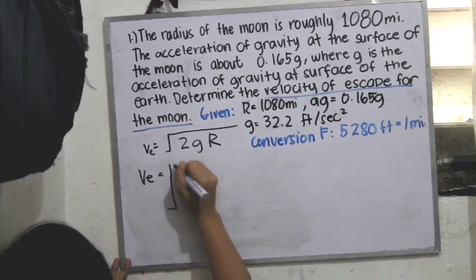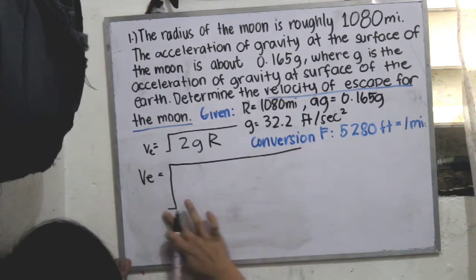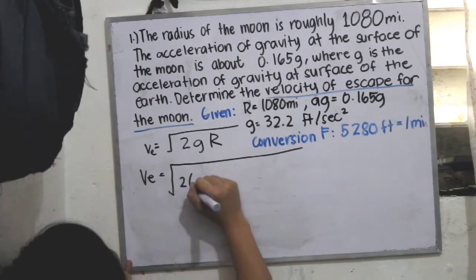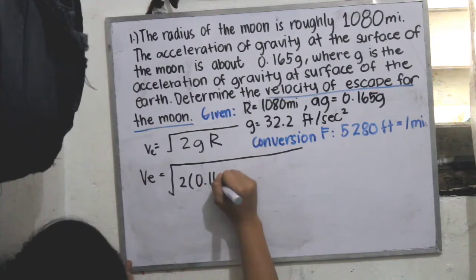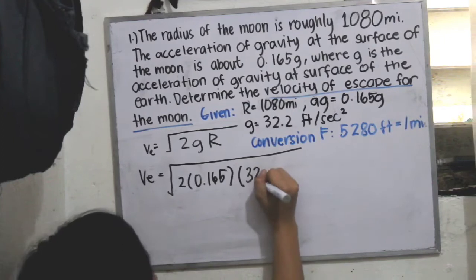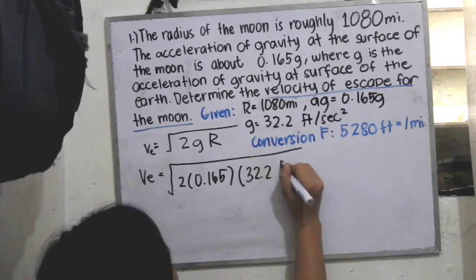Which are 2 multiplied by 0.165 multiplied by g, which is 32.2 feet per second squared.